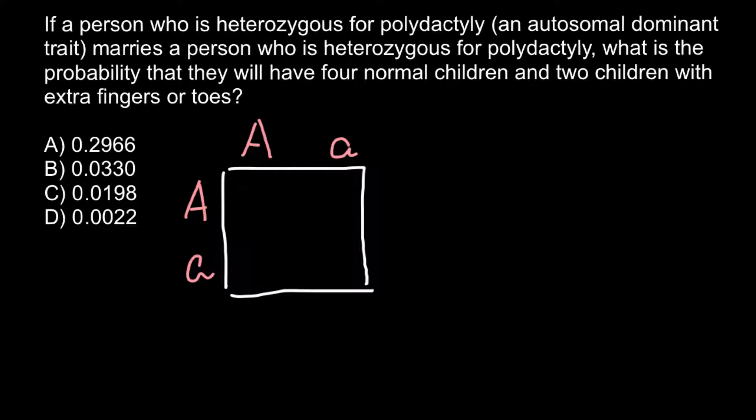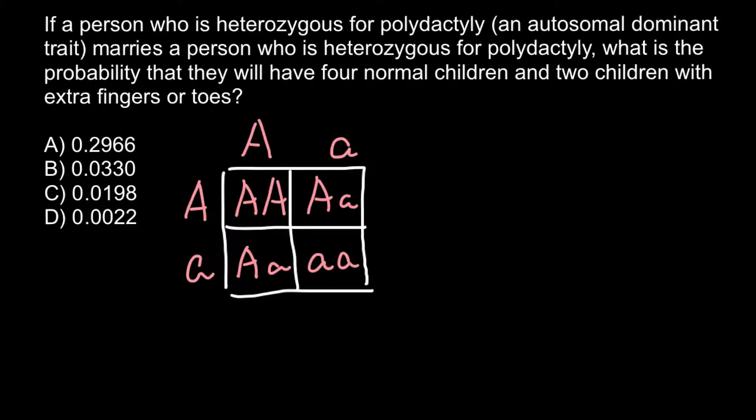When we build a Punnett square, we can find the probabilities for the offspring to inherit this genetic disorder. The results are: AA, Aa, Aa, and aa. According to the Punnett square, the offspring would have a three out of four probability of being affected with this genetic disorder, and only one out of four — or 25% — can be expected to be phenotypically normal.